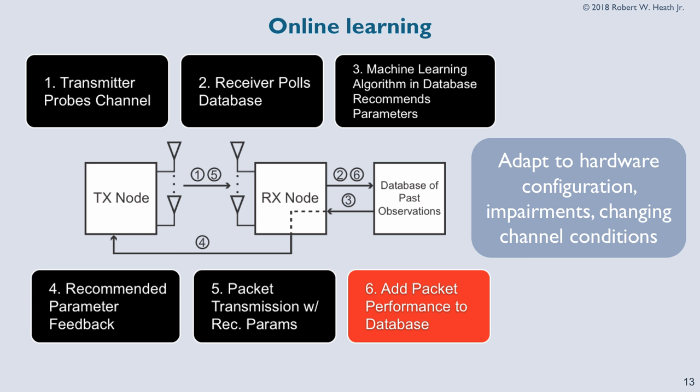The machine learning-based approach works as follows: probe the channel, the receiver probes the database to figure out the suggested rate, sends the parameters back to the transmitter, and the transmitter transmits the packet with the recommended information. Then we take that packet — whether it was decoded correctly, the coding modulation, and the feature vector — store it, and use it to update the classifier.